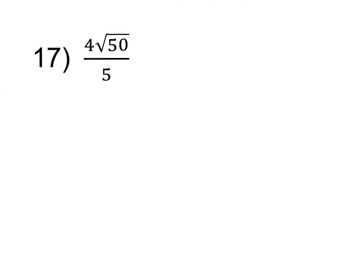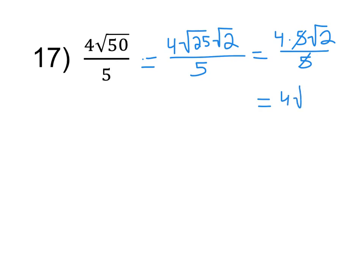This is the last problem we'll do together, number 17. I look and I see that 50 and 5 look like they could simplify, but since only 50 is in the radical, the only number that could simplify with this 5 would be the 4. Those do not have any common factors, so I'm just going to do the problem out. I have 4 times the square root of 50, and I know that the largest perfect square factor of 50 is 25, so I'm going to break it out. This gives me 4 times 5 times the square root of 2 all over 5. My 5's will simplify, so my final answer here is 4 times the square root of 2.